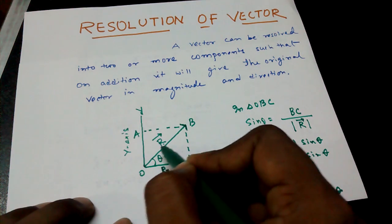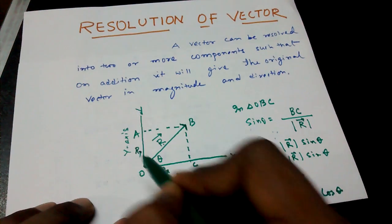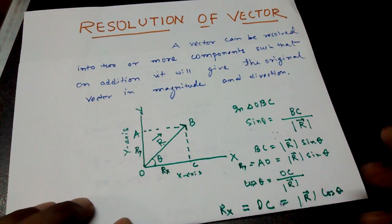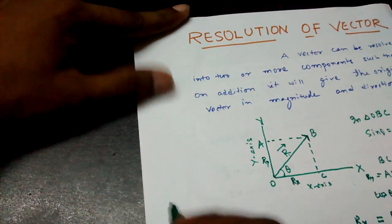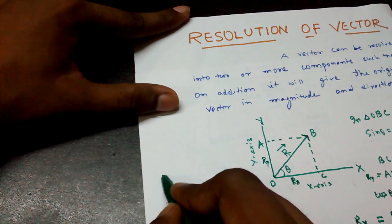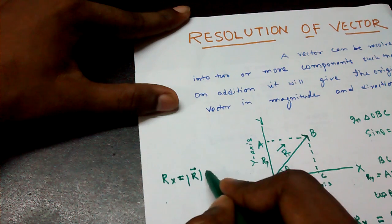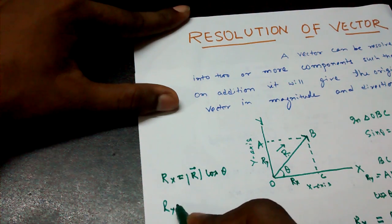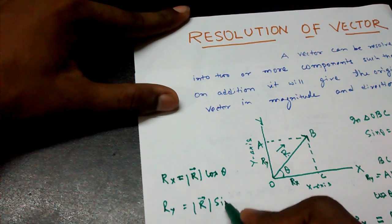Similarly, OY is the Y component of the vector R. So this is Ry. And here I am putting Ry. So if I write very clearly over here, then Rx becomes R cos theta and Ry becomes R sin theta.